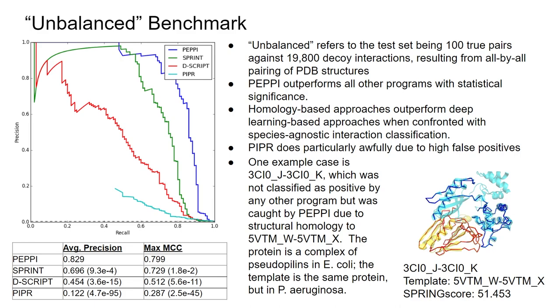Particularly interesting: homology-based approaches like PEPPI and SPRINT outperform deep learning approaches like DPPI and PIPER. Our hypothesis is that these deep learning pipelines are trained on species-specific datasets, so in species-agnostic situations like this benchmark, they don't do as well.